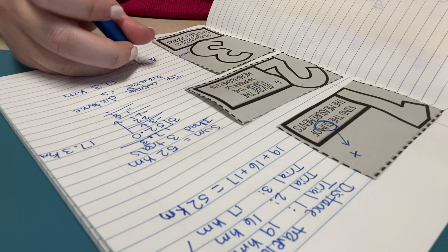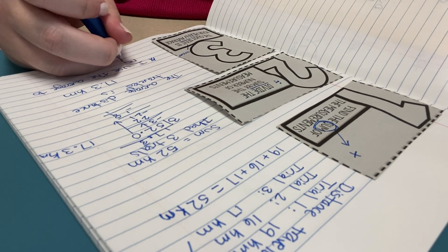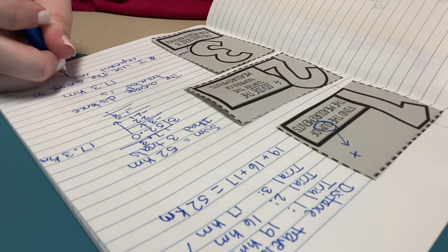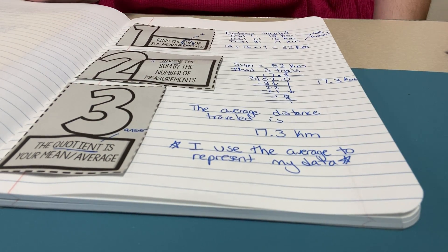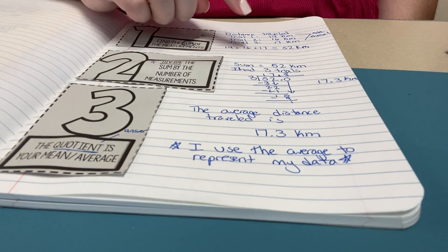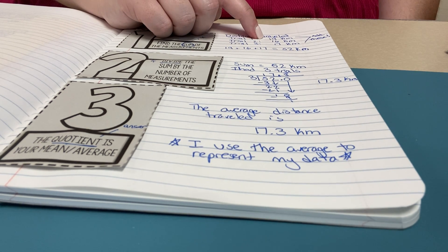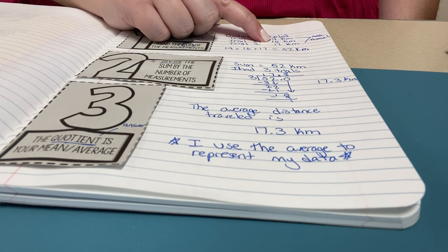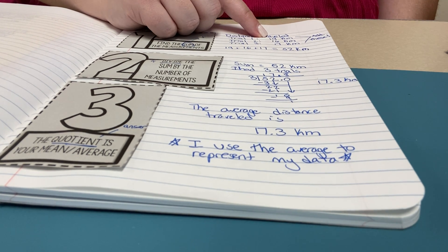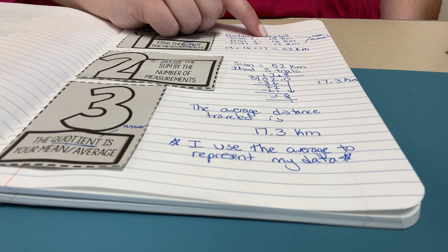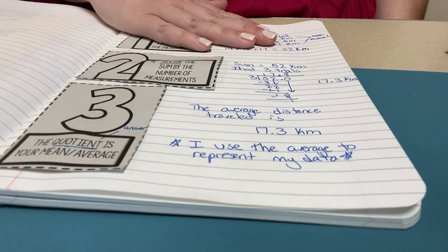And we're going to write a little note to ourselves. Why do we use the average? I use the average to represent my data. It gives me a nice picture of what happened during those trials. And when we look at 17.3, it's a little bit bigger than our third trial, a little bit more than our second trial and smaller than our first trial. And that's what an average does. It's going to kind of give you the middle number between what you found. Because maybe I threw a paper plane too hard in the first trial, or I put too much force and it traveled a little too far or a little too less in trial two. So finding the average really gives us the best picture for what we need to find.